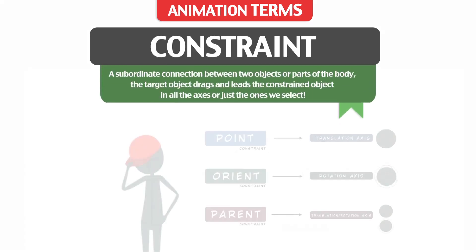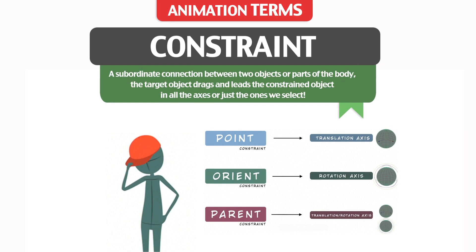Constraint: a subordinate connection between two objects or parts of the body. The target object drags and leads the constrained object in all the axes, or just the ones we select.